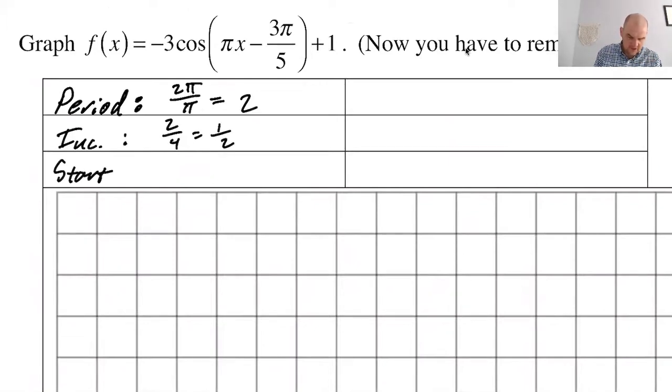Start, which is where the pattern starts. So the starting point for us, we take whatever's in parentheses, set it equal to 0 and solve. So it's going to be πx minus 3π over 5 equals 0, which means that x is 3 fifths. Ideally, we want to write these with the same denominator. So this is 5 tenths and this is 6 tenths. And that means that we can put the start in the middle and then just add multiples of the increment over and over again, and it's going to work out fine.